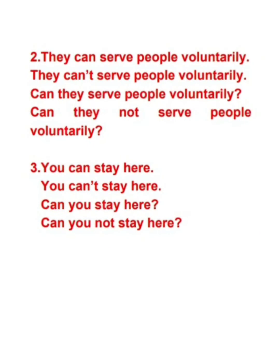Look at the second sentence: 'They can serve people voluntarily' — positive statement. To make it negative, add 'not' after 'can': 'They can't serve people voluntarily.' Yes/no question: 'Can they serve people voluntarily?' Negative yes/no: 'Can they not serve people voluntarily?'